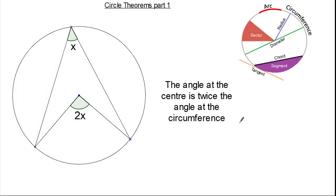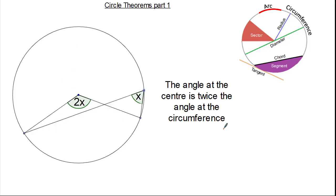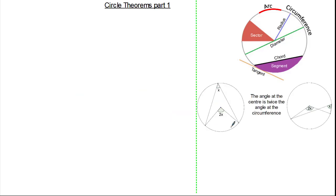A nice way to spot this theorem is to look for an arrowhead, but it does not always look like an arrowhead. Here you can see we are using the same principle — two radii making the angle at the centre connecting to form our angle at the circumference. Here the shape is different but the circle theorem is still the same.